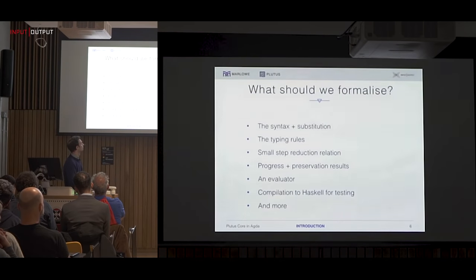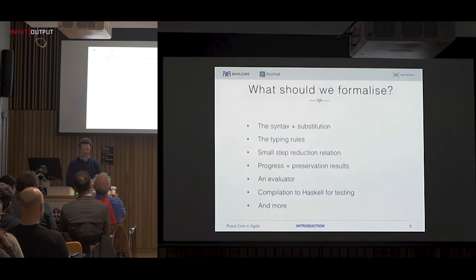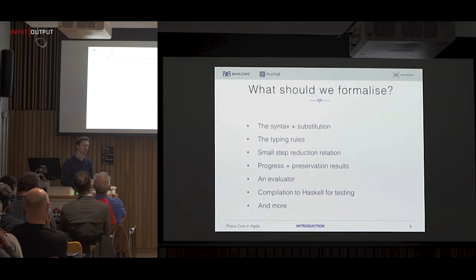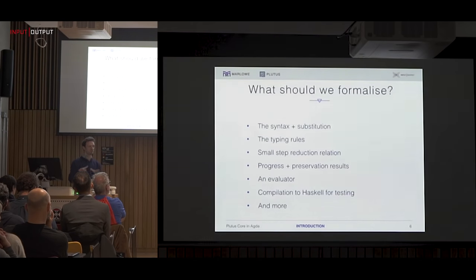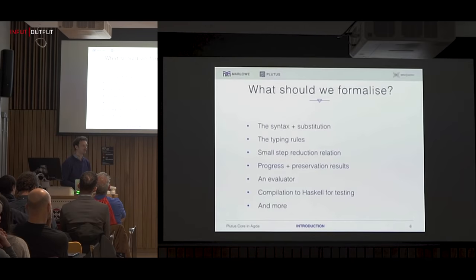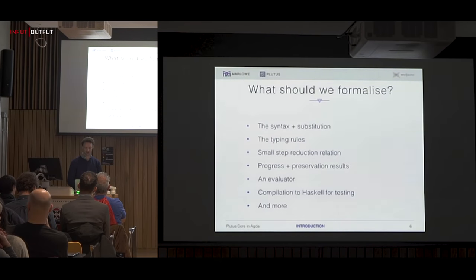So what should we actually formalize for Plutus Core? At the very least, we should formalize the syntax and substitution. We would like to formalize the type system to check it's correct. We want to formalize the dynamics — we're formalizing the small-step reduction relation, which is operational semantics rather than denotational semantics. We can then prove progress and preservation results and use this to hook up an evaluator by iterating the reduction.